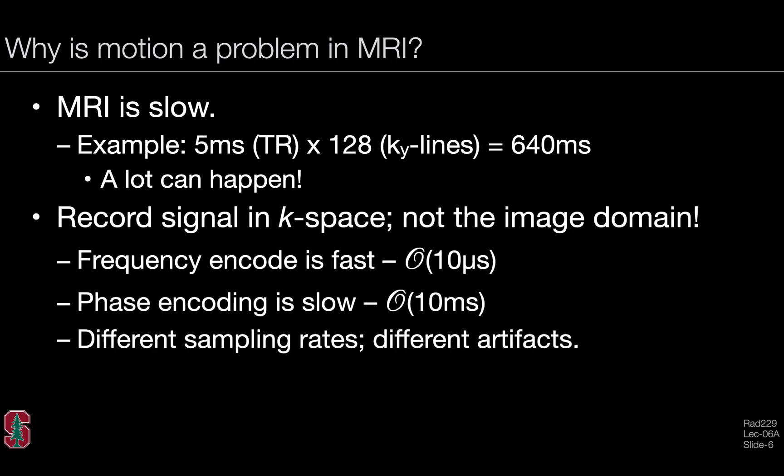We record the signal in the K-space domain, and that's important to remember because how motion impacts image quality relates directly to what's happening in K-space or where we are in K-space during the moment of image acquisition. We're not directly acquiring our data in the imaging domain. Frequency encoding is fast. The time to acquire a single K point in the readout direction is on the order of about 10 microseconds. Phase encoding, on the other hand, is quite slow. The time between phase encode steps is on the order of many milliseconds, if not much longer. There's clearly quite different sampling rates in the frequency encode and phase encode directions, and this will contribute to different artifacts.